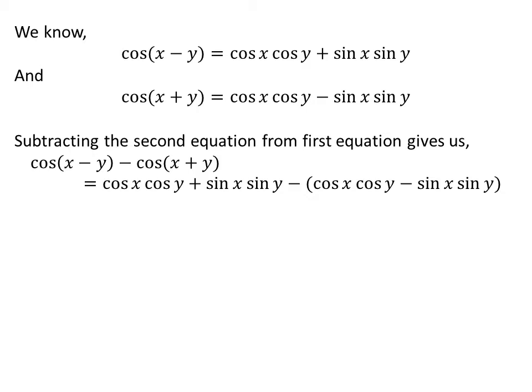Subtracting the second equation from the first equation gives us cosine of x minus y minus cosine of x plus y is equal to cosine of x times cosine of y plus sine of x times sine of y minus cosine of x times cosine of y minus sine of x times sine of y.